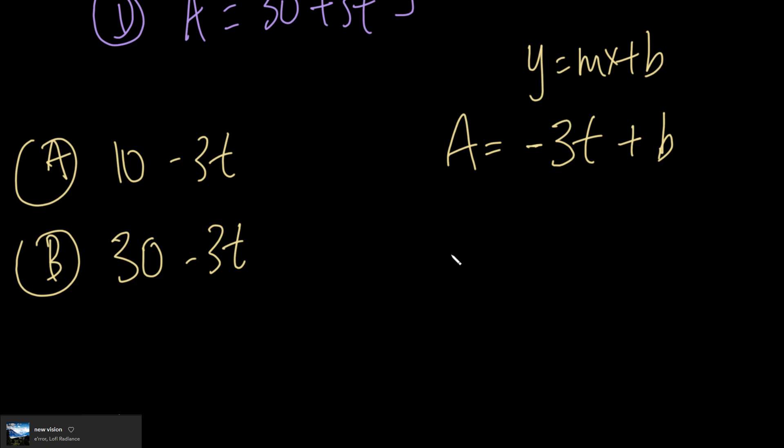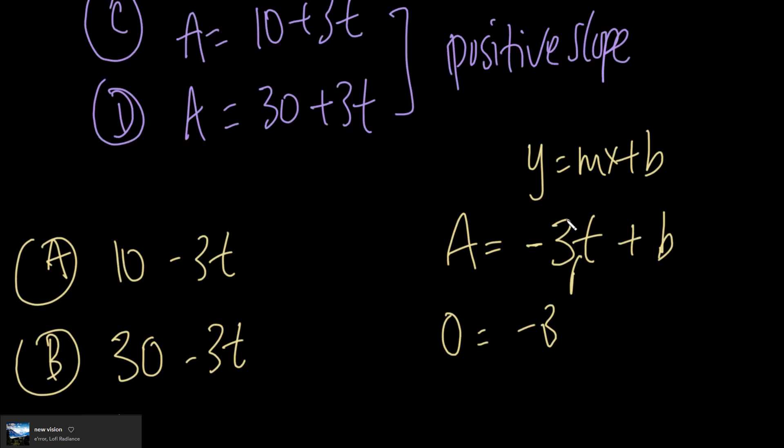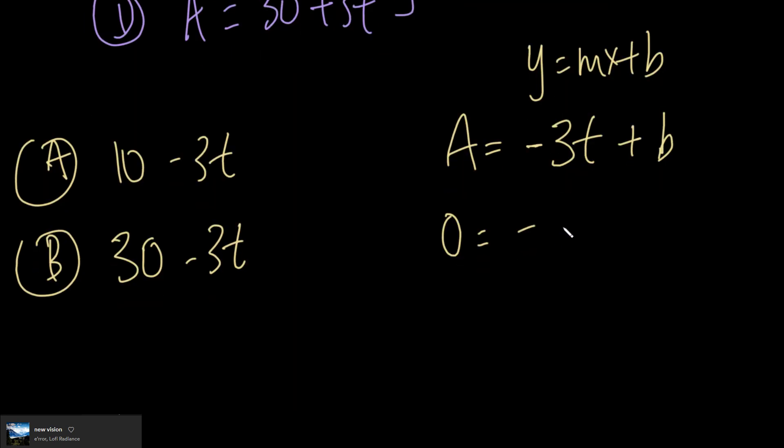I'll take the point (10, 0) because that's what we were given. In this case, we have 0 = -3(10) + b, and we're going to isolate for b. We have 0 = -30 + b. We're going to add 30 to both sides, which means 30 = b.